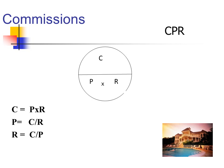We have C, the top half of the circle, equals P times R. If you put your thumb on P, you have C over R. And if you put your thumb on R, what's left is C over P. Those are our three formulas. To find commission, we multiply price times rate. To find the price, we take the amount of commission and divide it by the rate. And to find the commission rate, we take the amount of commission and divide it by the price of the property.